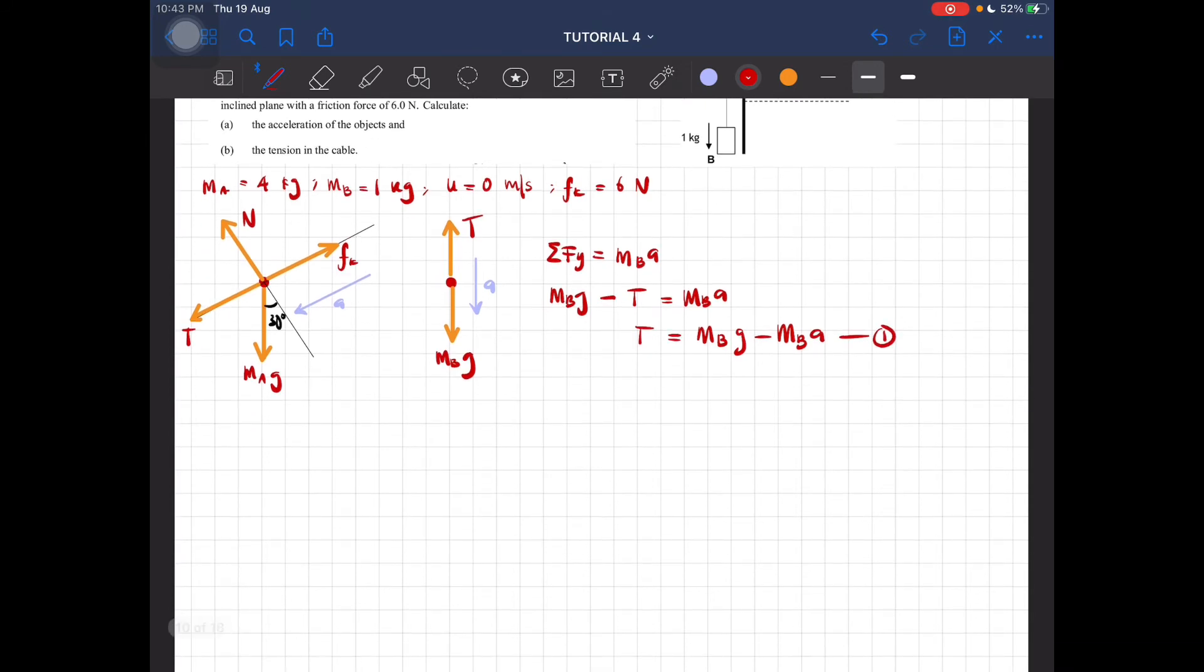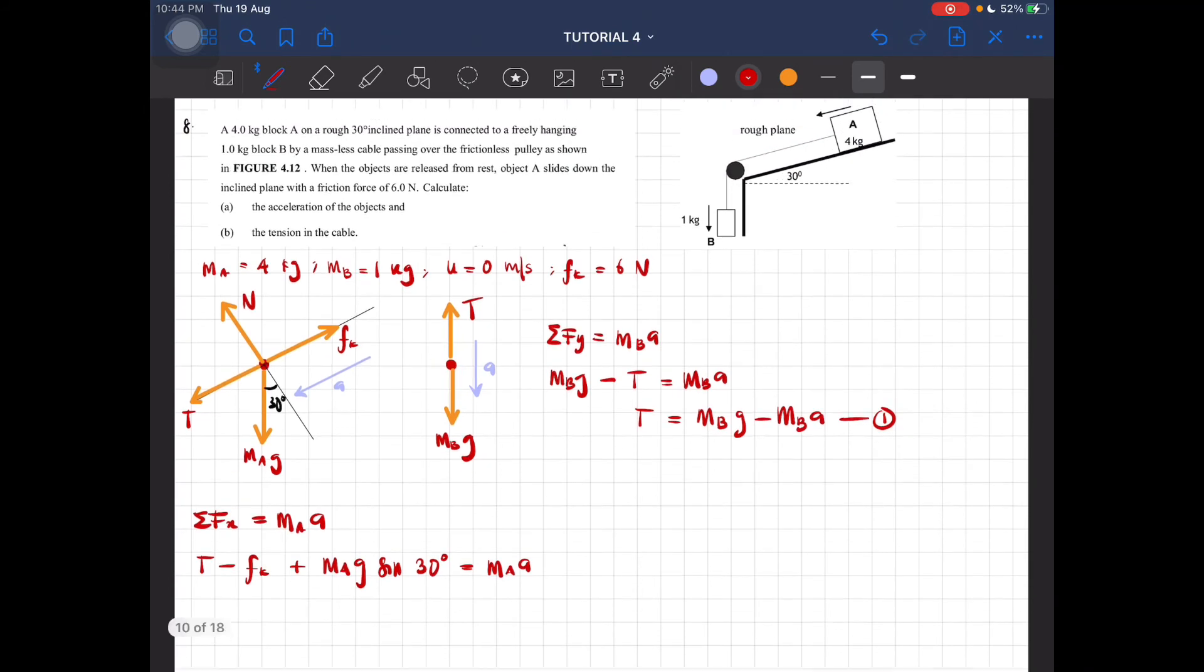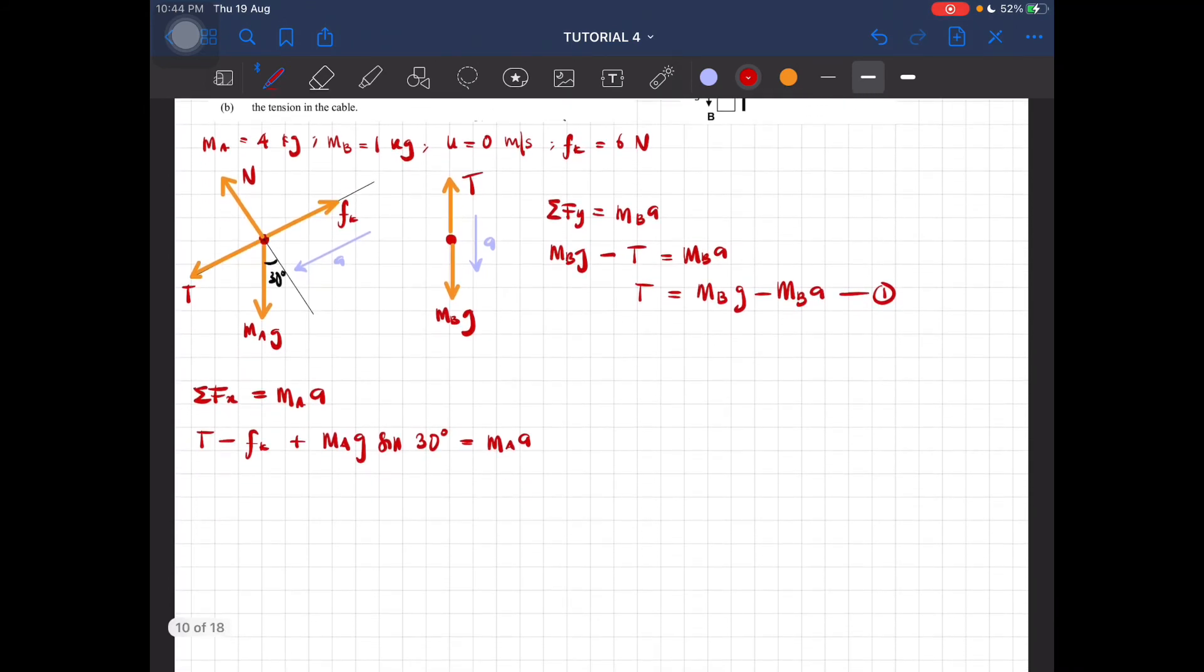For block A, the total force at x equals m_A a. So T minus f_k plus m_A g sin 30 degrees equals m_A a. This is equation 2.